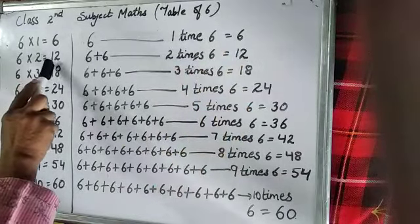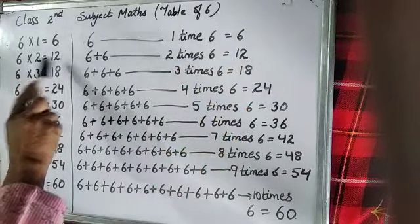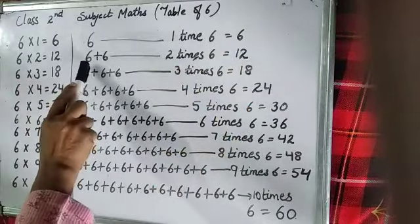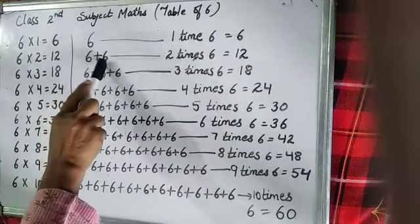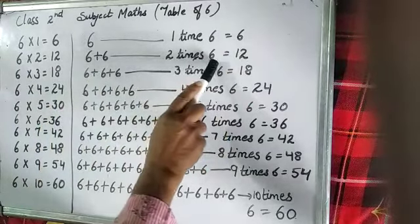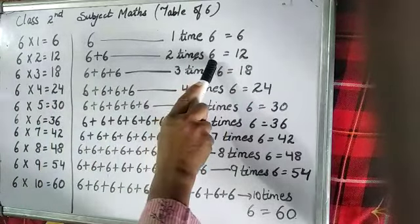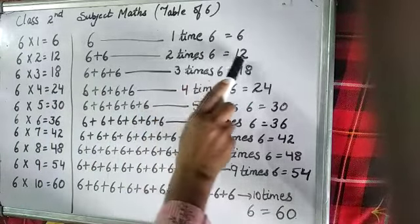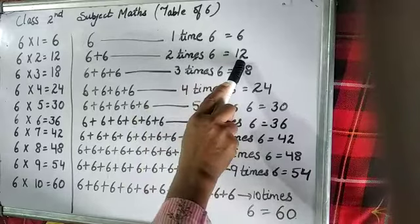6 2s are 12. 6 plus 6 means 2 times 6. 2 times 6 means 12.